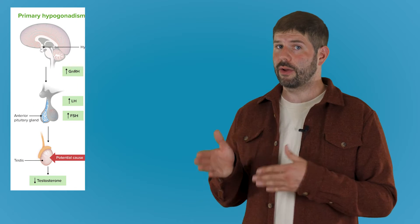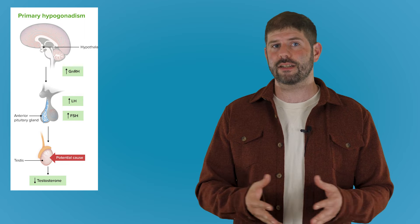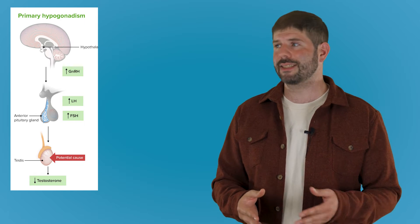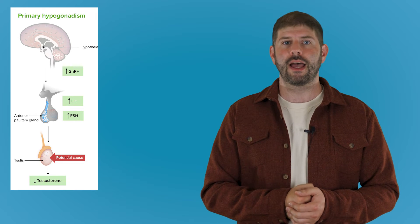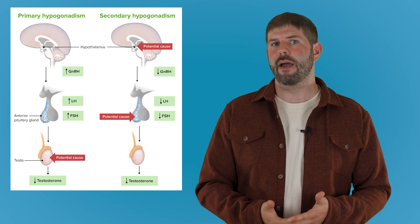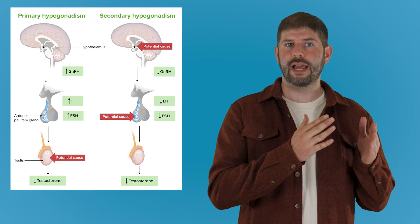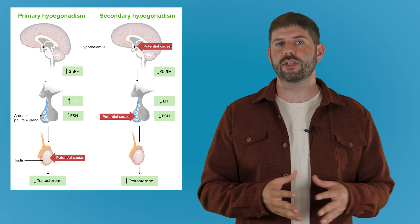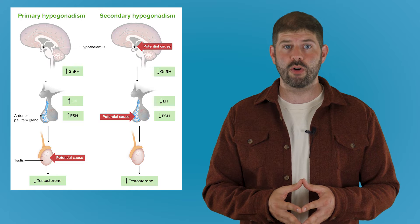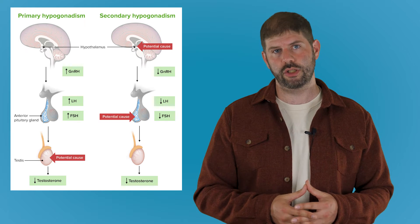Primary hypogonadism is basically testicular failure. Your brain is working okay, but your testes just aren't producing testosterone properly. This could be because of genetic conditions, testicular trauma, autoimmunity, or certain drug treatments. Secondary hypogonadism means that there's some form of disruption in the pituitary gland or the hypothalamus. That can be due to damage of the brain or drugs, chronic illness, chronic stress, or emotional issues.